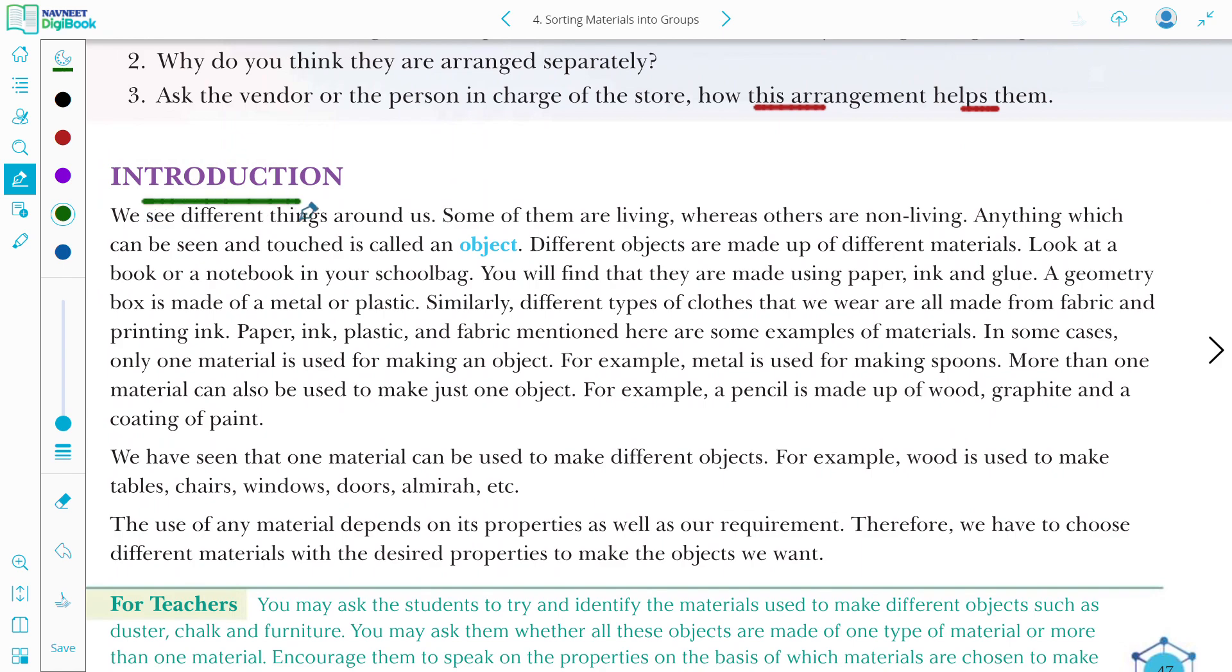Introduction. We can see different things around us. Some are living, some are non-living, right? Anything that can be seen and touched is called an object. Different objects are made up of different materials. How? You can see your book or notebook, your school bag. Then what you find? That would be known to be made by paper or glue. If you look into a geometry box, then it is made by metal or plastic. Similarly, different types of cloths, which are different types of fabrics, are made from different types of fabrics. Printing inks also, paper, ink, plastic, fabric, all these are examples of materials.